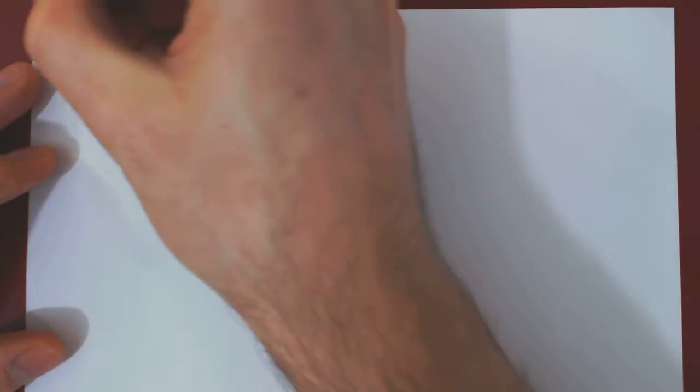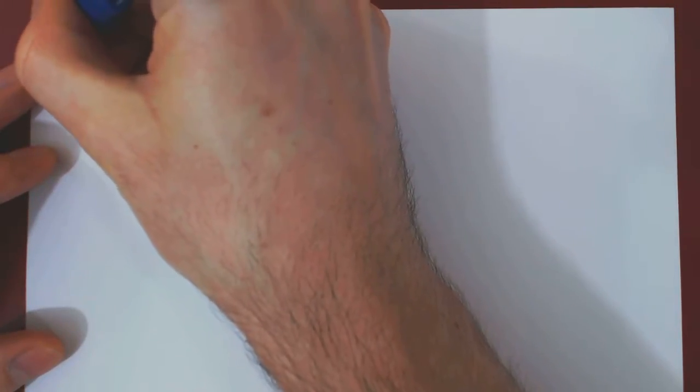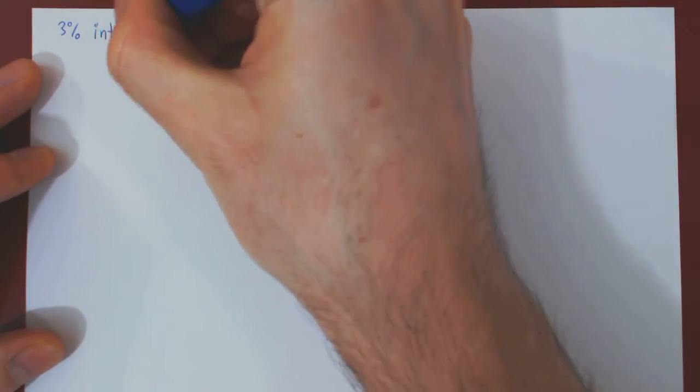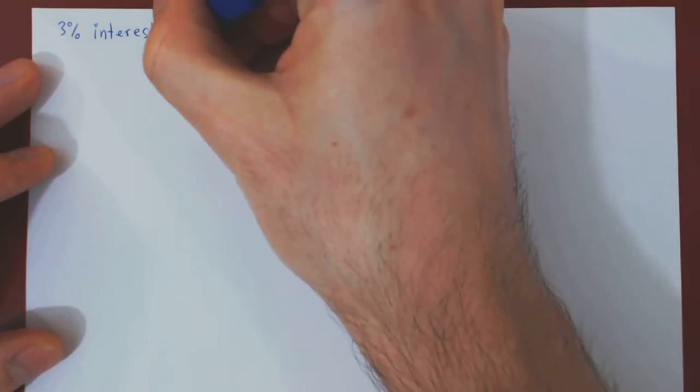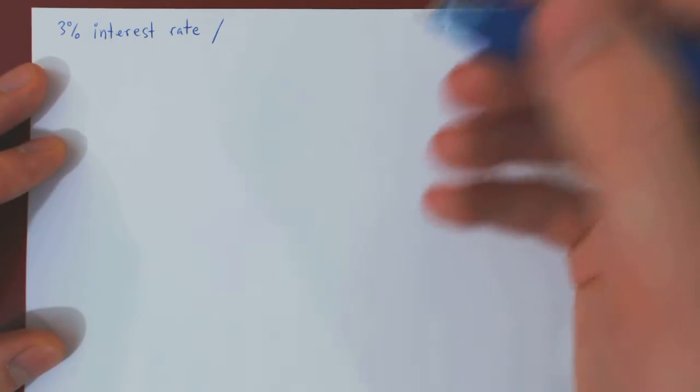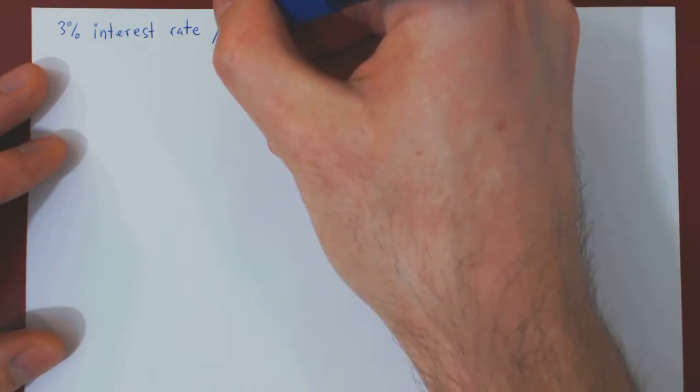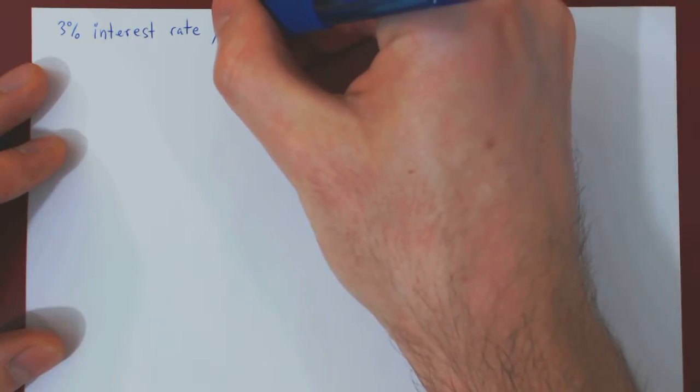So suppose that for a single unit of time we can invest money at a 3% interest rate. And this is per some arbitrary unit of time. It could be a year, it could be a month, we don't know, but whatever it is, it doesn't matter.